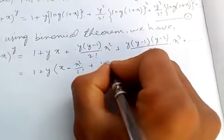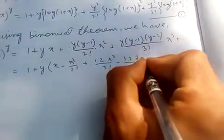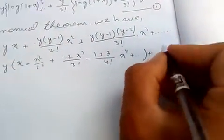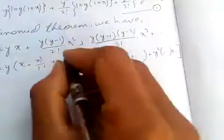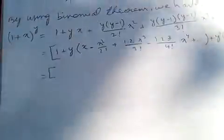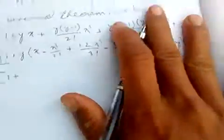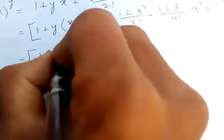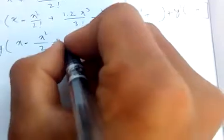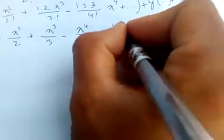Continuing the simplification, the next term gives 1 times 2 times x cubed by 3 factorial, and minus 1 times 2 times x to the 4th by 4 factorial, and so on. After simplification, we get one plus y times the bracket: x minus x squared by 2 plus x cubed by 3 minus x to the 4th by 4, plus and so on.